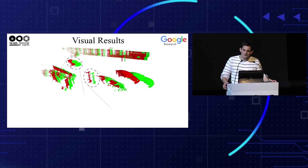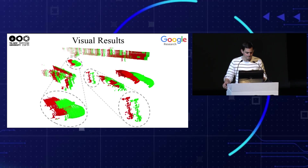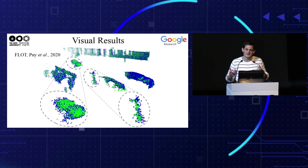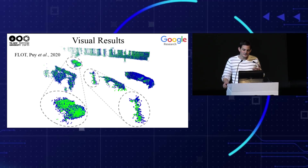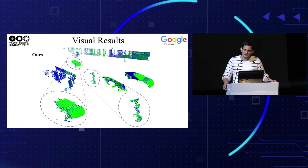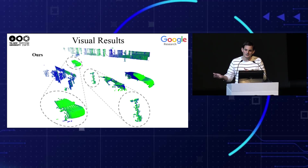Let's see a visual result on the KITTI scene flow dataset. This is the result of FlowNet, a very popular scene flow method that uses the second approach of learning both correspondence and refinement. As you can see, the warped source point cloud in blue is noisy and the structure of objects in the scene is compromised. In contrast, our method computes a much more accurate result that preserves the local geometry and correctly aligns the two point clouds together.